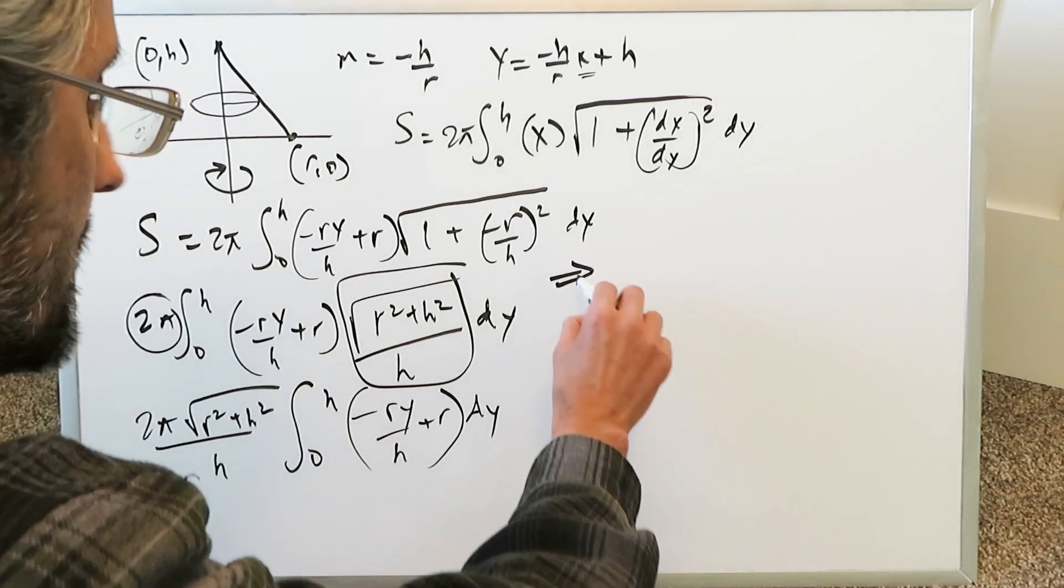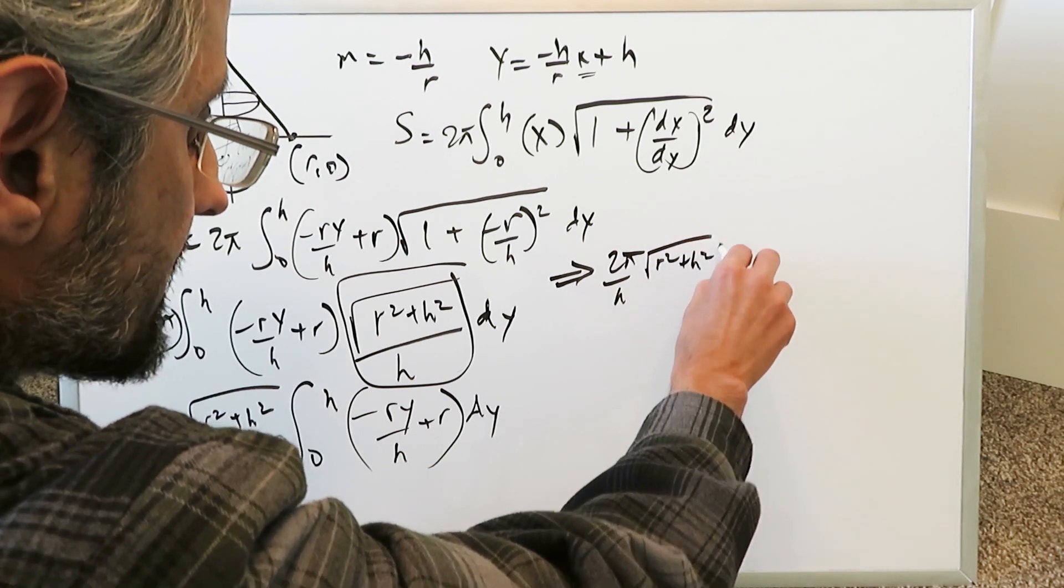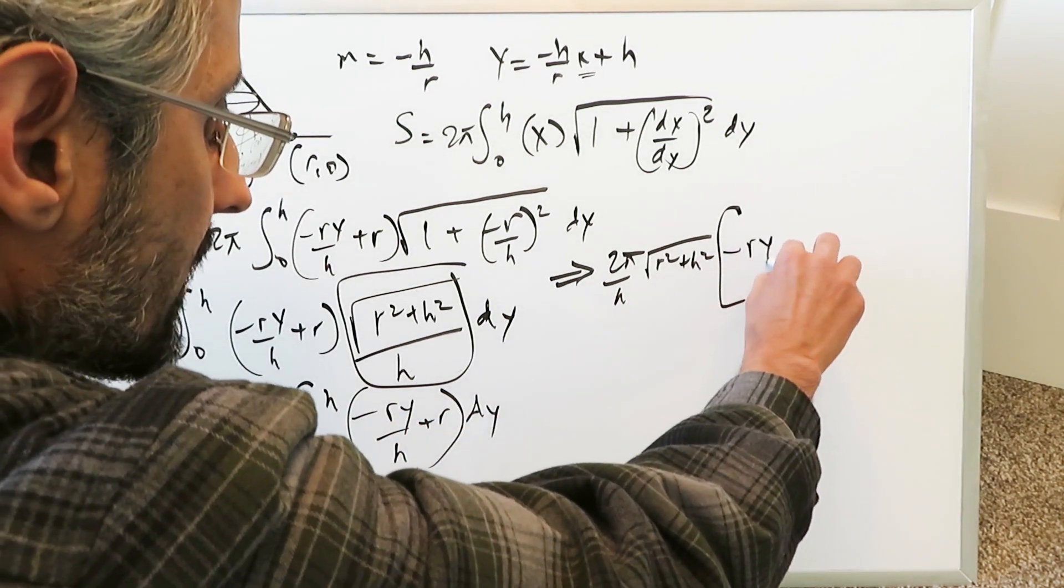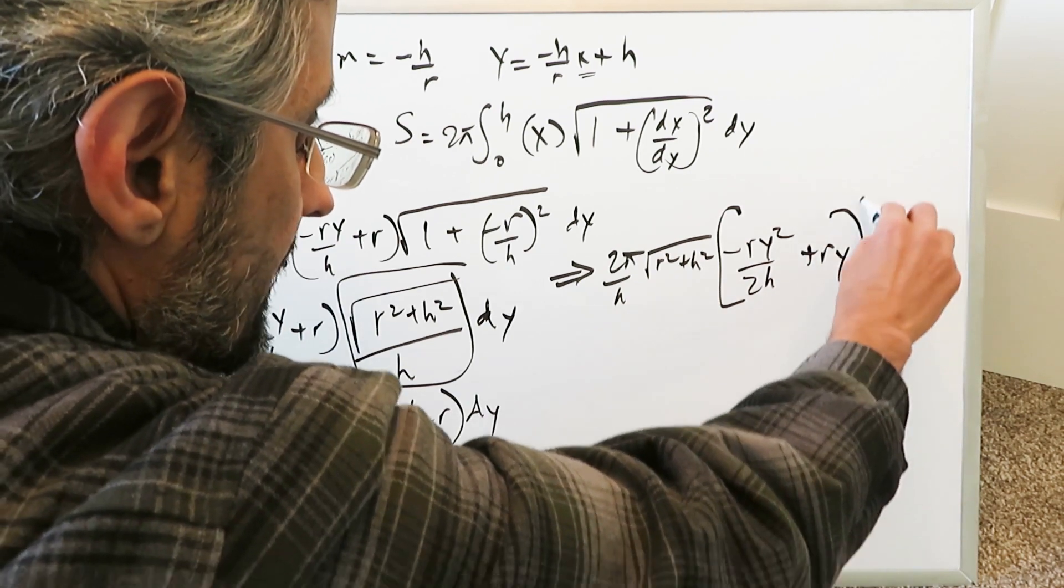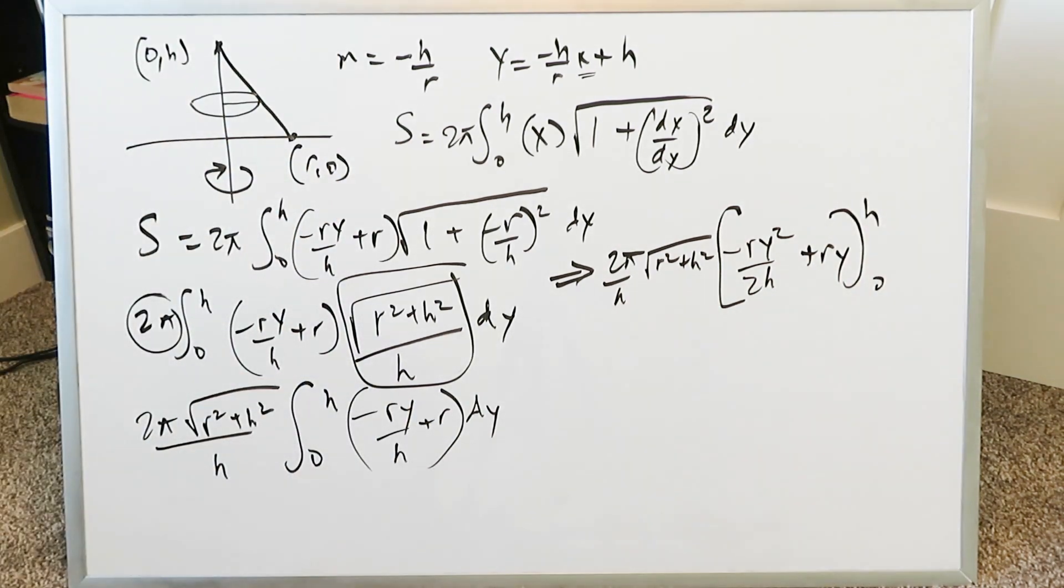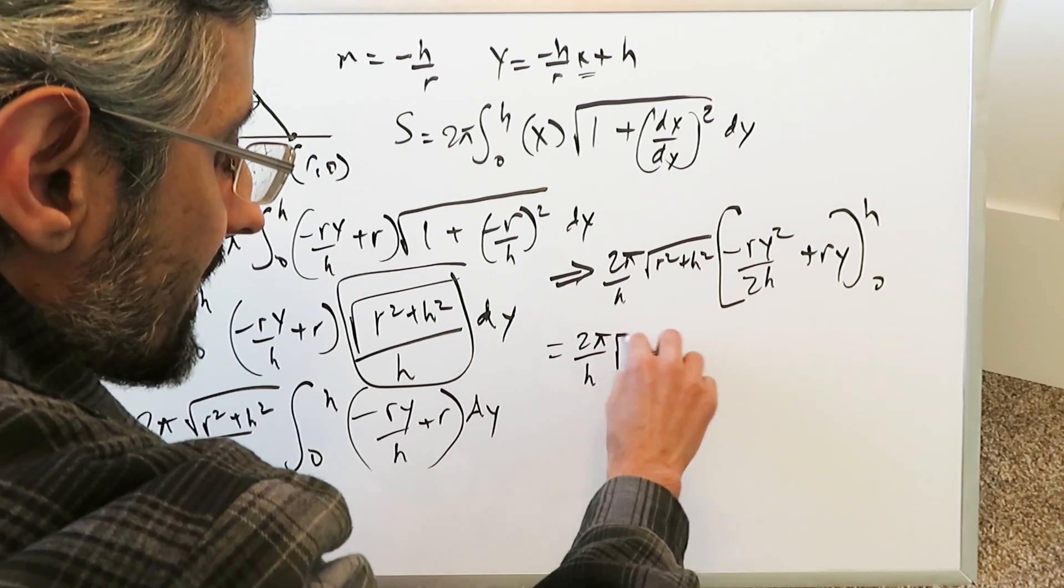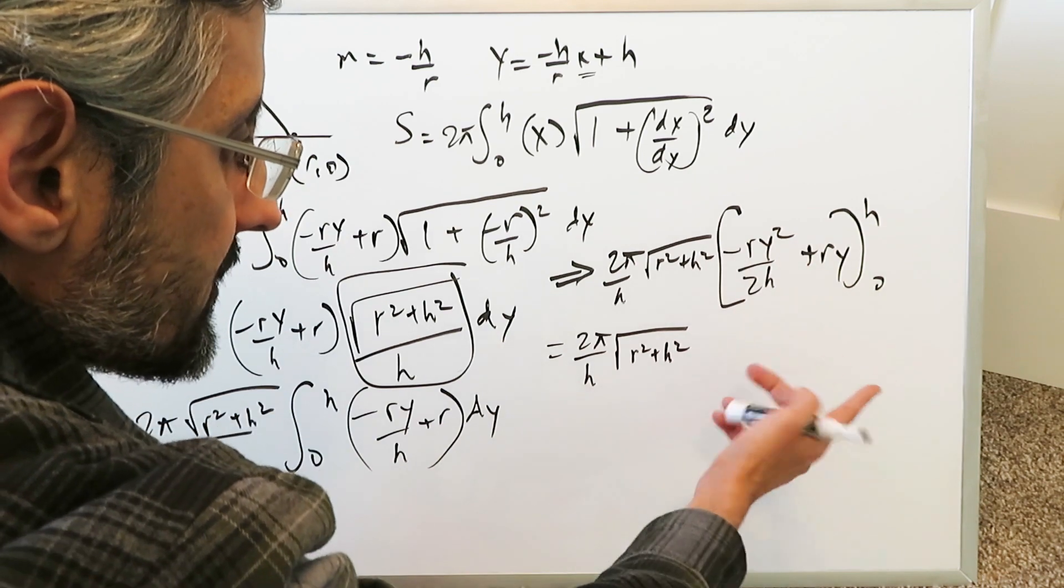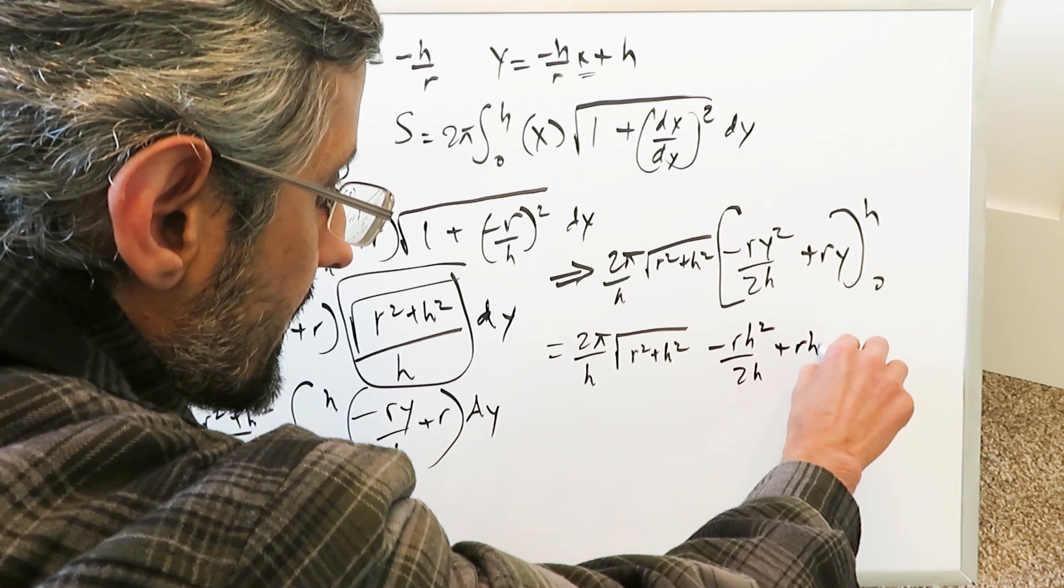We come right over here. We have 2 pi over h and then we have r square plus h square. And now let's do the antiderivative of this. Everything here with respect to y, we'll have minus r y square over 2h plus ry, upper limit h and lower limit 0. From this point onwards we'll have 2 pi over h. You have this r square plus h square. 0 is meaningless. But you'll have minus r h square over 2h plus r h.